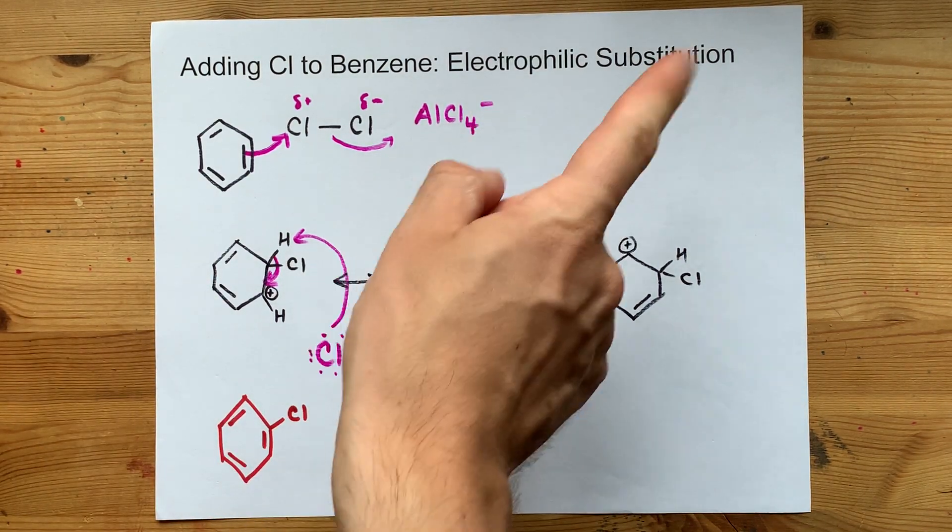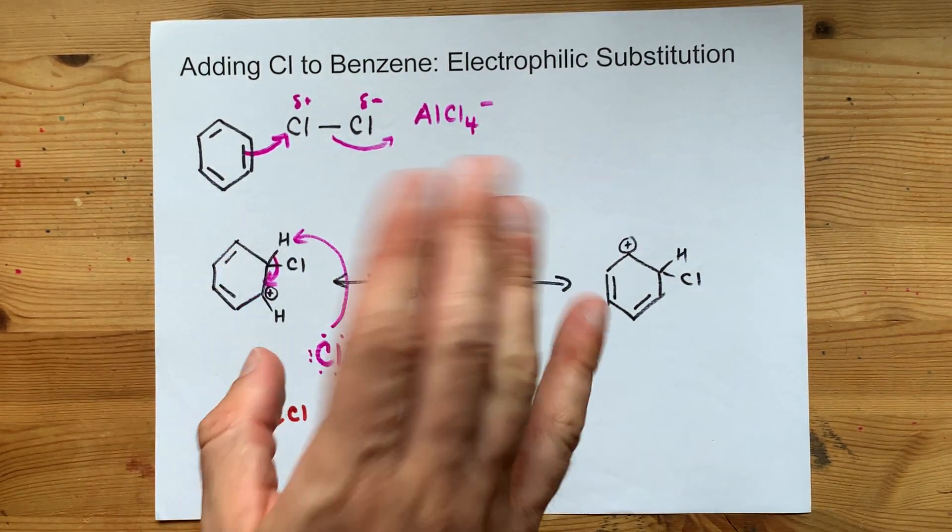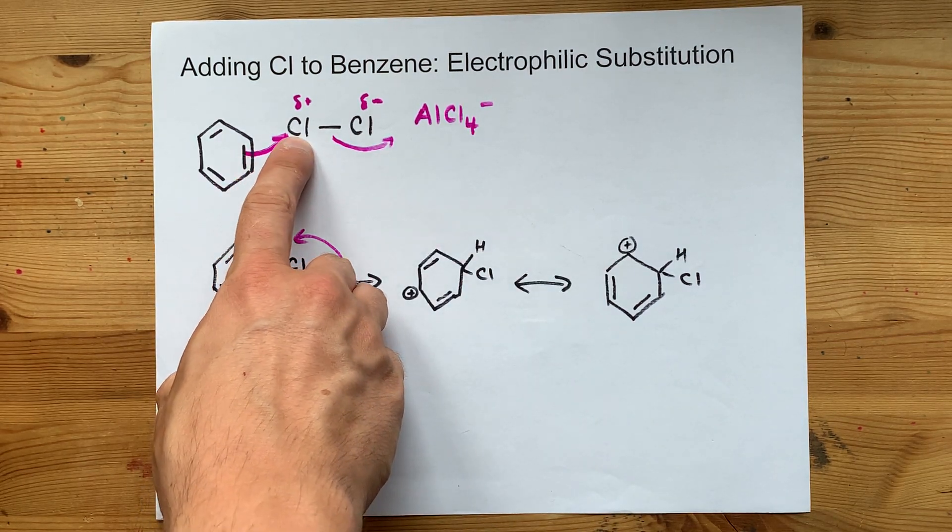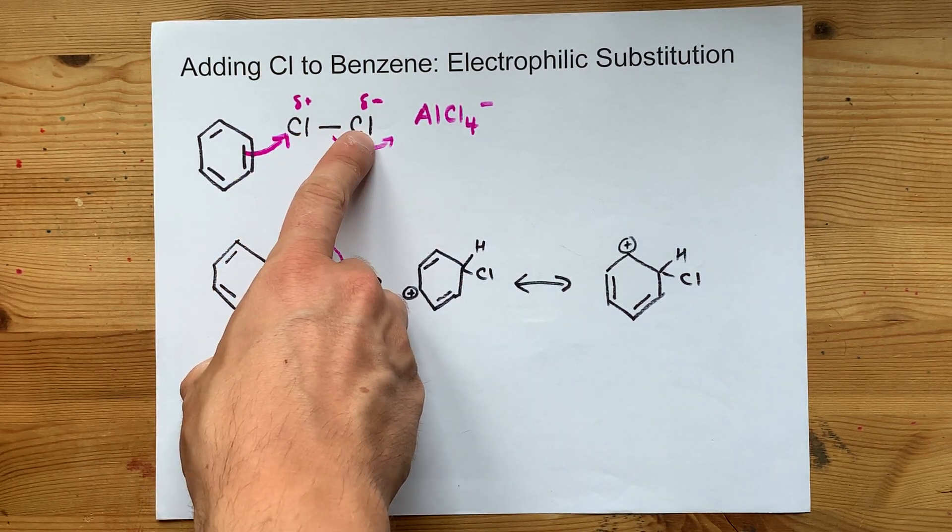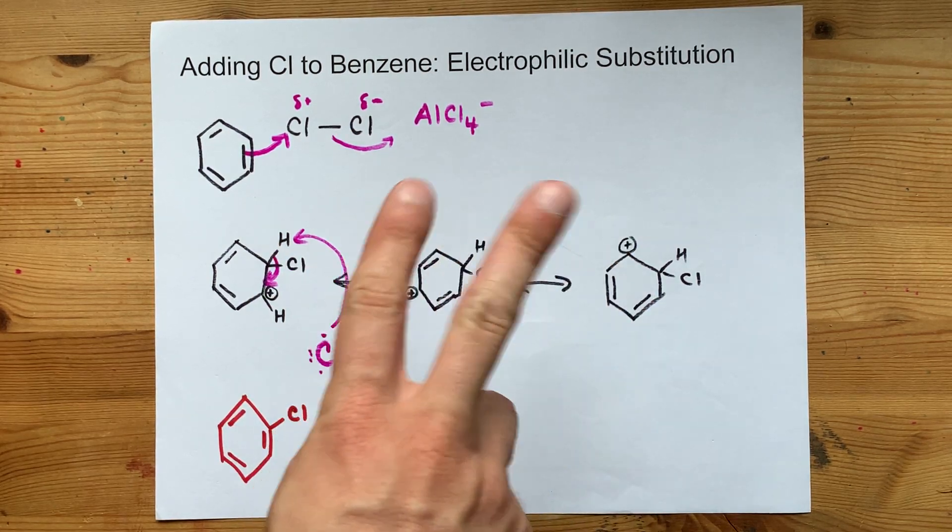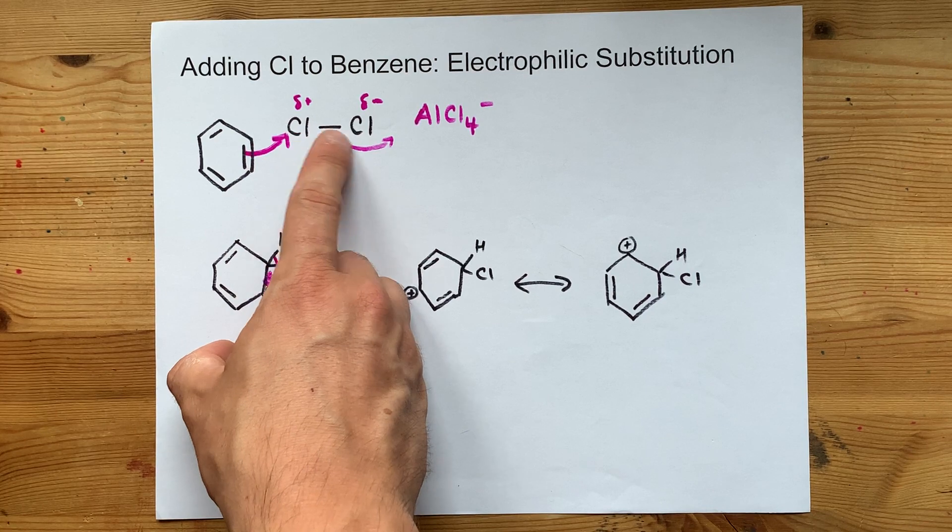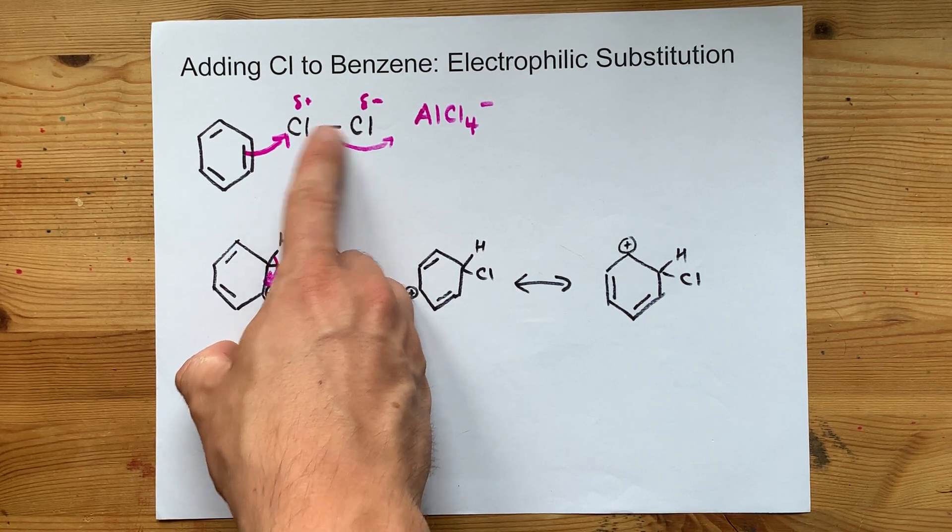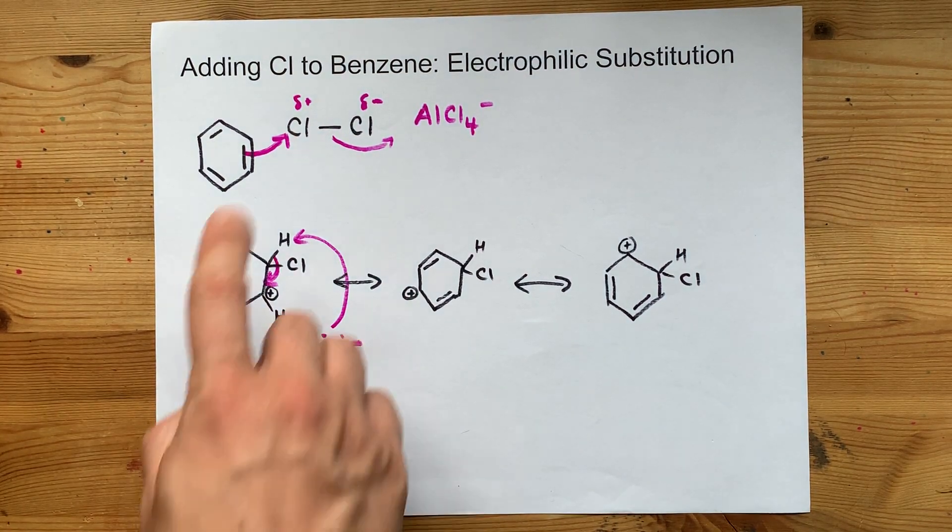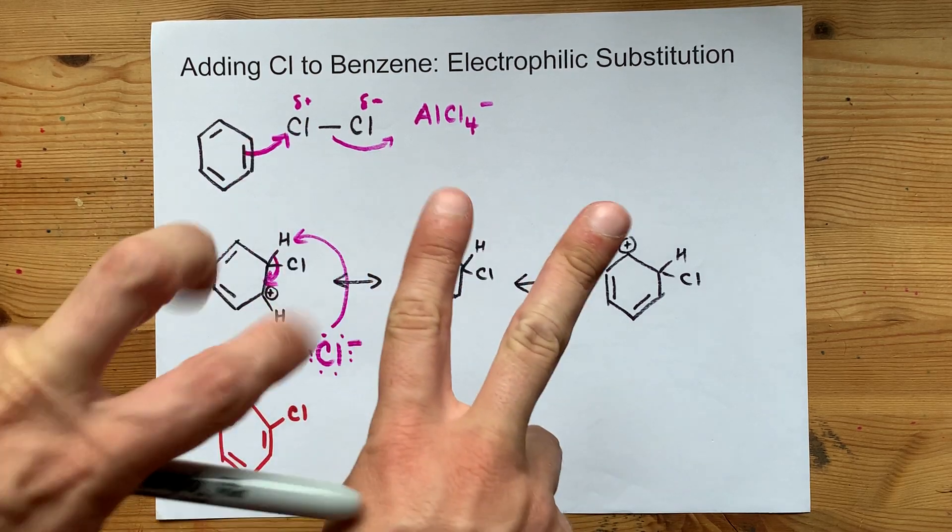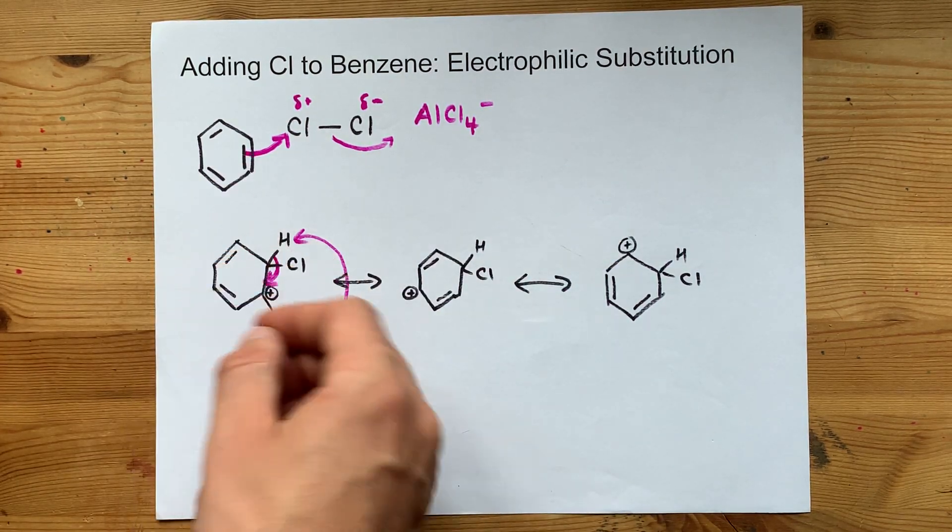So the electrophilic substitution here occurs by attacking one of the Cls of the Cl2 molecule, and that is an attractive proposition for the electrons because you've repelled the electrons of this covalent bond away from it. That breaks open one of the double bonds in benzene,